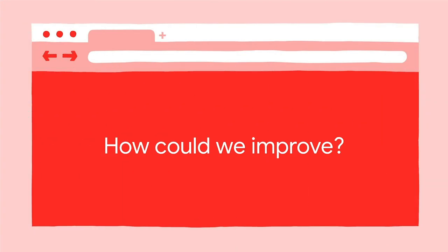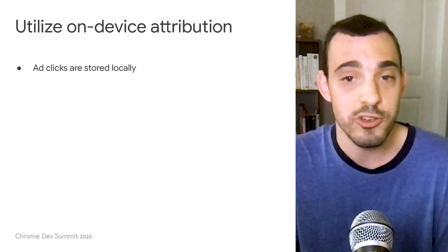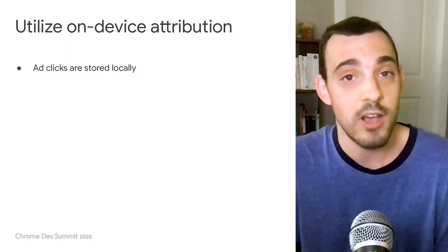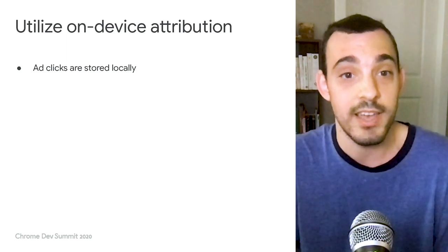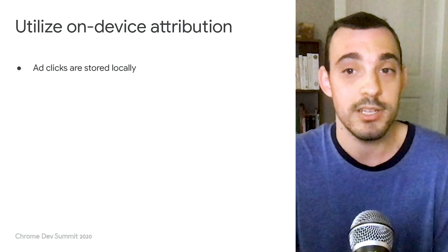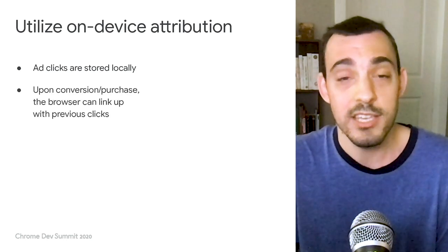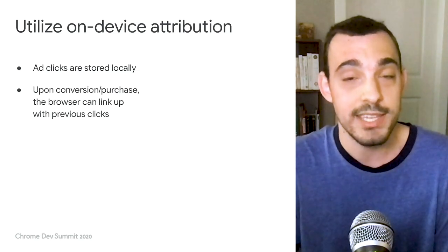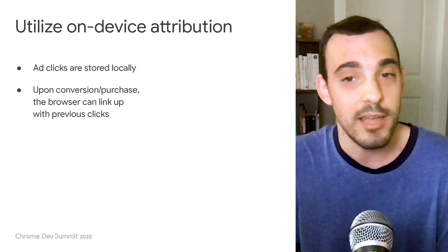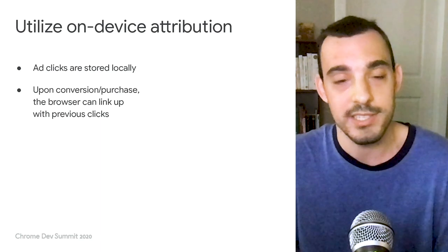How could we improve things here and allow for this important use case in a more privacy-preserving way? The biggest change we can leverage in a new browser API to preserve privacy is to perform attribution between the ad click and the purchase all on your device locally within the browser, as opposed to on a server using a cookie. Because the browser has control over the linked data it will report, it can apply a bunch of techniques to preserve privacy.